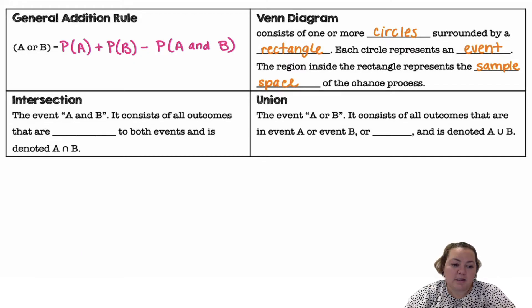The intersection are the events A and B. It consists of all outcomes that are common to both events and is denoted A and B. So that symbol is and. It is the intersection.